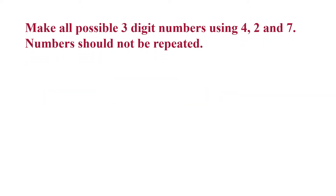Have a look at this question. Make all possible three digit numbers using 4, 2 and 7. Numbers should not be repeated. First, we will remove the comma and write the numbers together to get a three digit number. Here, the numbers are 4, 2 and 7. So, the first three digit number that we will write is 427.